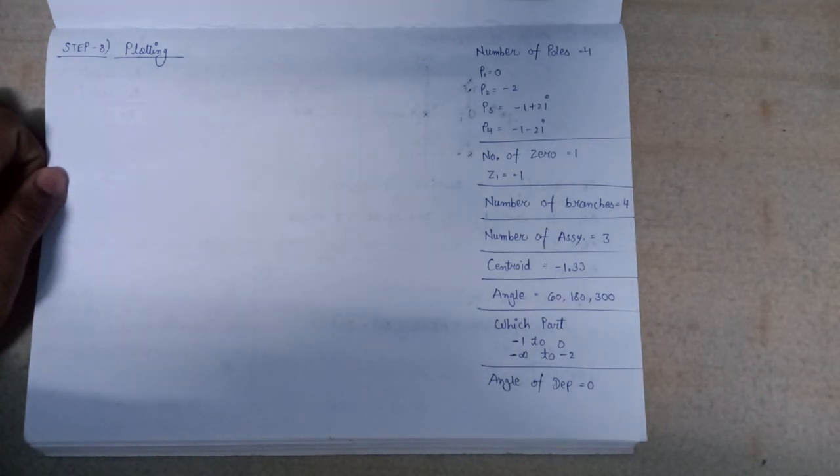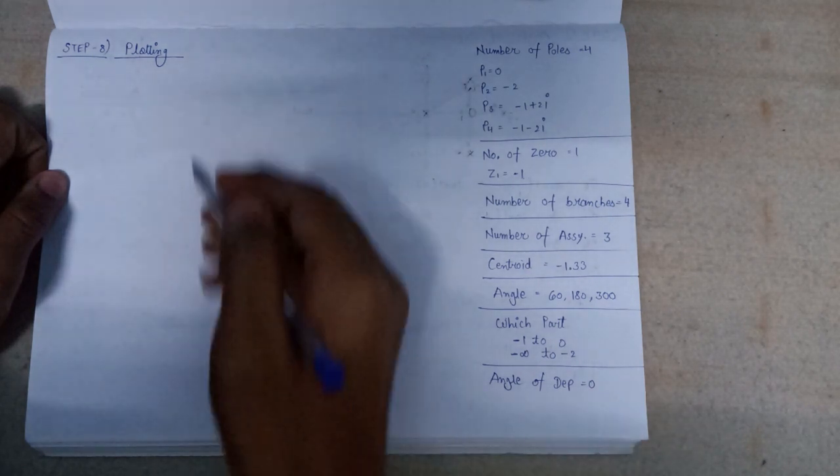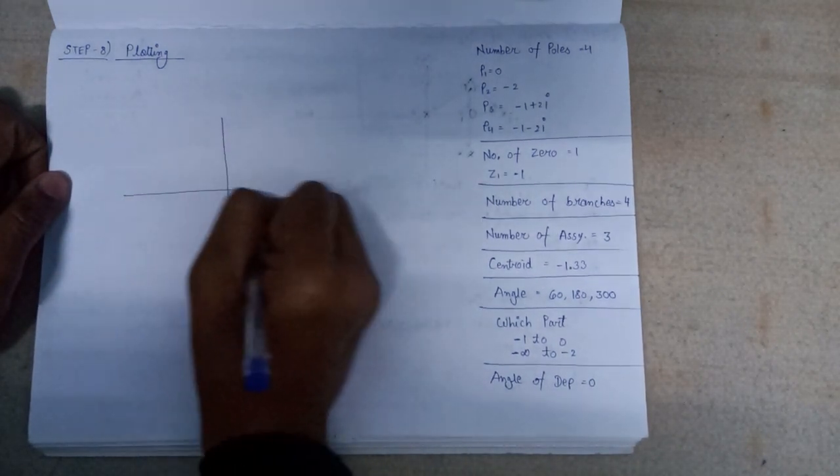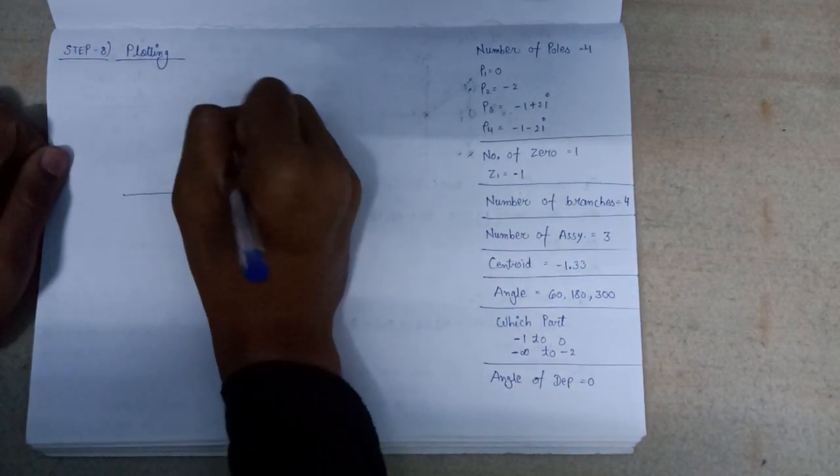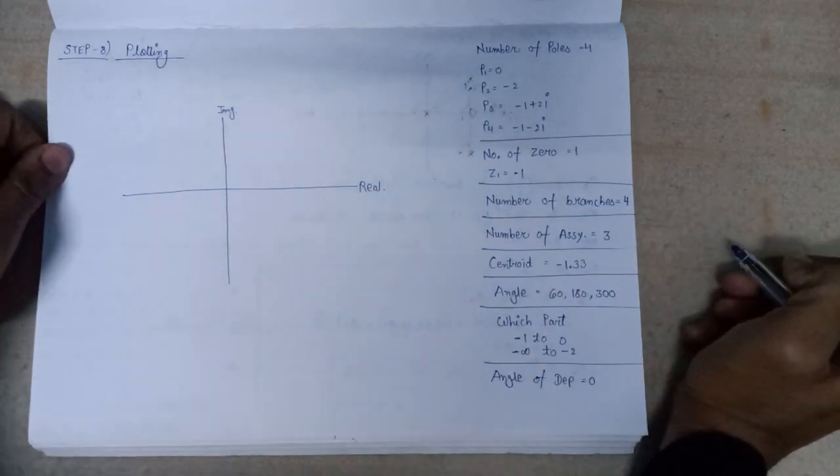Moving on to the last and final step, that is plotting of root locus on the real axis. So this is the S plane, this is the imaginary axis, this is the real axis of S plane.